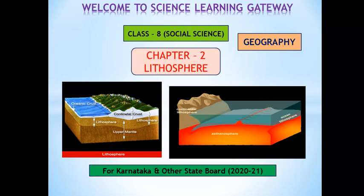Before starting, you should know what is lithosphere and the meaning of this word. Lithosphere is the outermost solid part of the earth. 'Lithos' means rock, so the lithosphere is the outermost solid layer of the earth. It is the layer of the earth which is solid and outermost, made up of rocks.